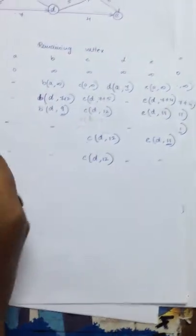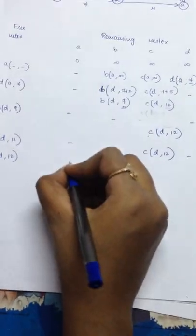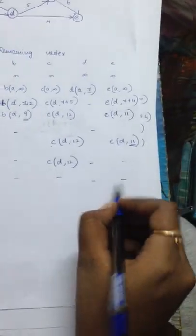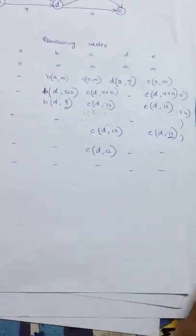Now, the last element. Only one node is there. C of D comma 12. You cannot access it through A, B, D, E. You cannot access the same element. So it becomes dash. So now we have reached the final step where no other node can be accessed.